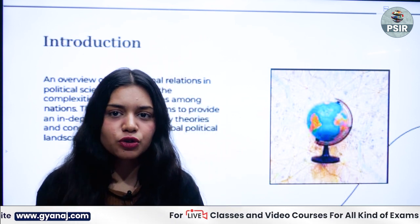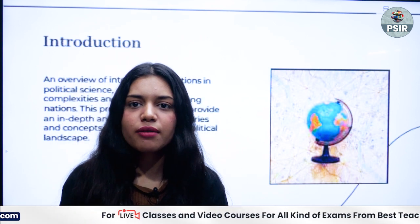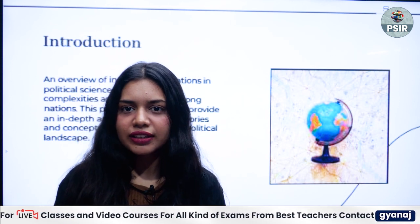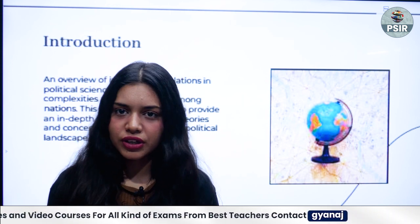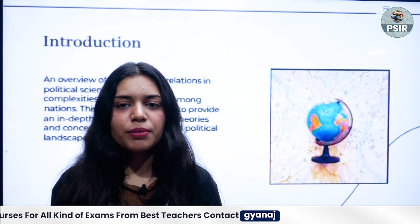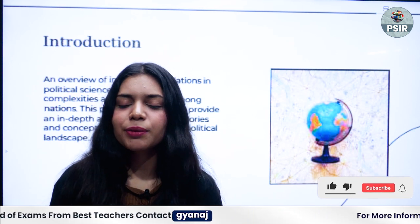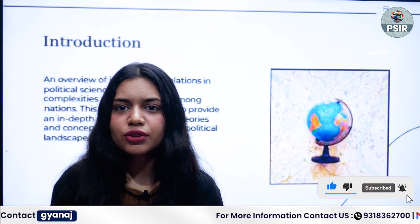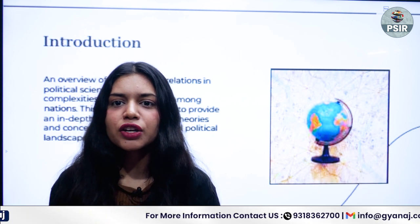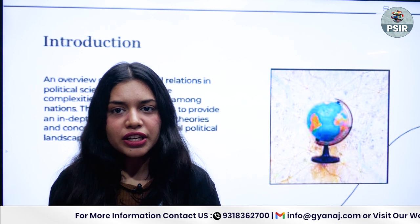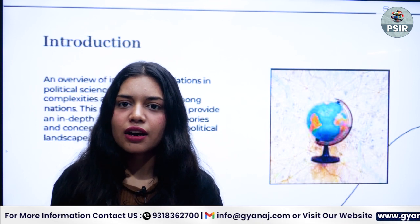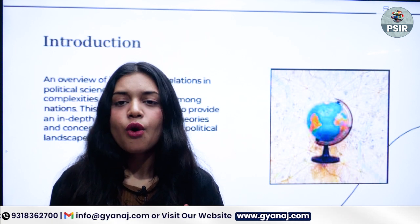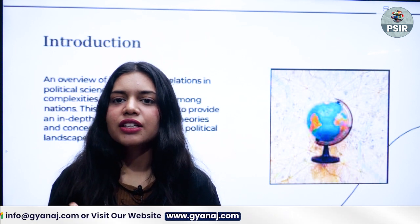In the PSIR option, you have two papers — Paper 1 and Paper 2. Paper 1 includes political science and Paper 2 includes international relations. Both are correlated, but there is a major difference when you study them in depth. You have to keep this in mind and familiarize yourself with the syllabus before you focus on your other strategies.